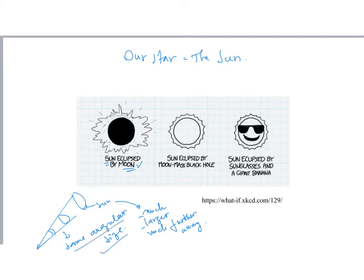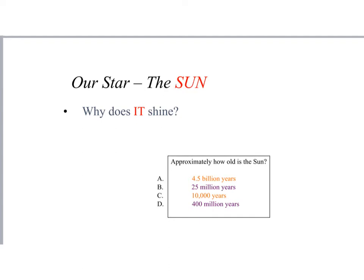How about this situation? It says here we have Sun eclipsed by a Moon-mass black hole. Well that is a tiny dot. We will learn later on how to actually calculate the size of a black hole, so basically no eclipse at all. And then the third situation, that's pure silly stuff. We're never gonna find that giant banana or giant sunglasses, but it's fine.